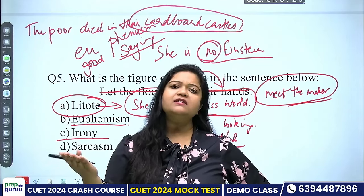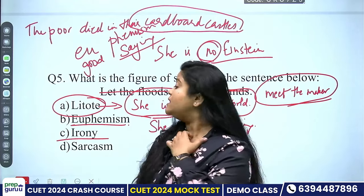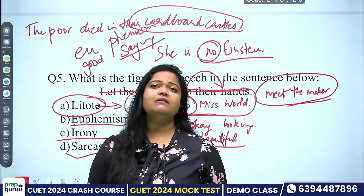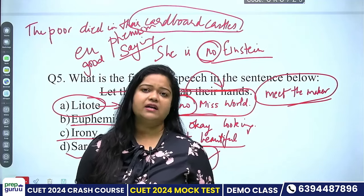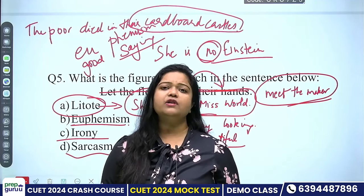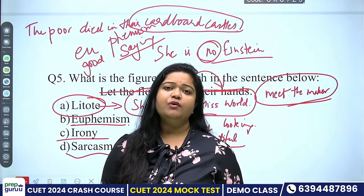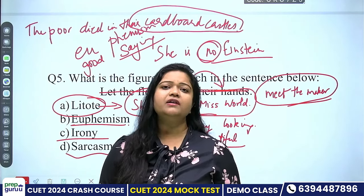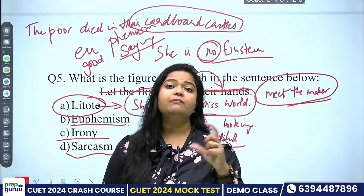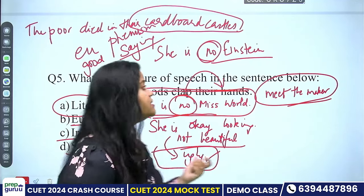Irony is when what happens is contrary to what we expect — that is ironical. Sarcasm is very close to irony but is a taunt or cutting comment. For example: 'You are eating as if you have an elephant tied to your stomach' — this is not irony but a joke or taunt, a sarcastic comment. That is the difference between irony and sarcasm.